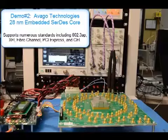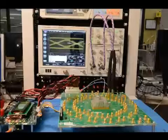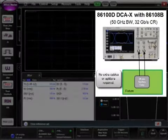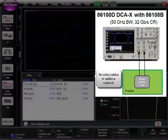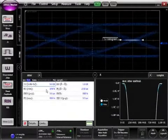This SERDES supports numerous standards ranging from 1 gigabit to 28 gigabits per second and beyond. As noted earlier, this setup is very quick and easy. Shown here is a jitter measurement on a differential pair operating at 28.05 gigabits per second.